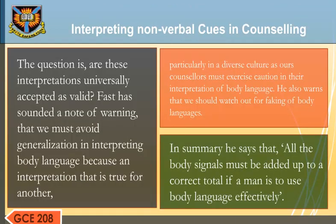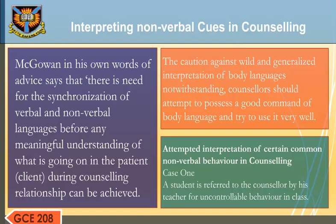The question is: are these interpretations universally valid? Fast issues a warning that we must avoid generalization in interpreting body language, because an interpretation true in one culture may not be true in another, particularly in a diverse culture. Counselors must exercise caution in their interpretation of body language and watch out for faking of body language. In summary, he says that all body signals must be added up to a correct total. McGowan, in his own words of advice, says there is need for the synchronization of verbal and non-verbal languages before any meaningful understanding of the counseling relationship can be achieved. Counselors should attempt to possess a good command of body language and try to use it very well.